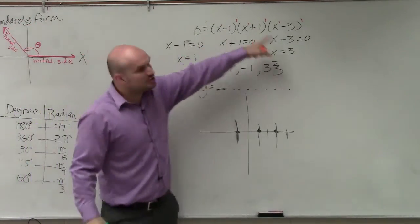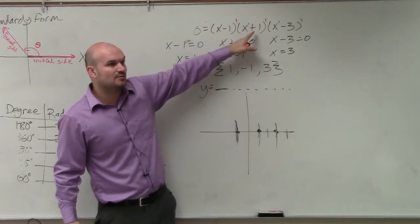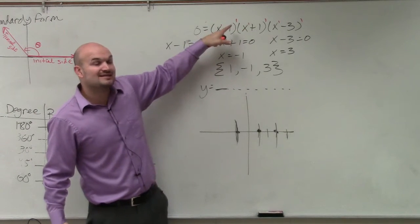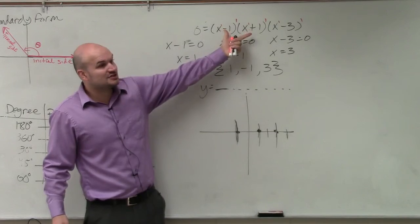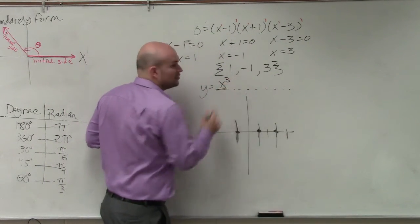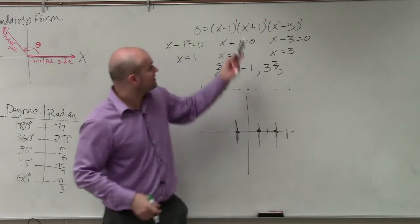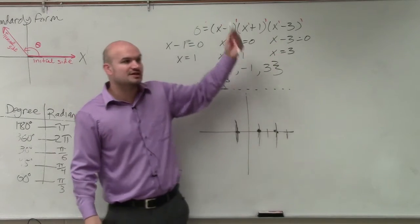So if you were to multiply this all out, what is going to give you the highest power? Well, x minus 1 times x plus 1. When you do the x times x, that gives you x squared. And then if you're going to do an x squared times something with an x, the highest power you're going to get is x cubed. And that leading term, all the leading coefficients are 1. So 1 times 1 times 1 is just 1.